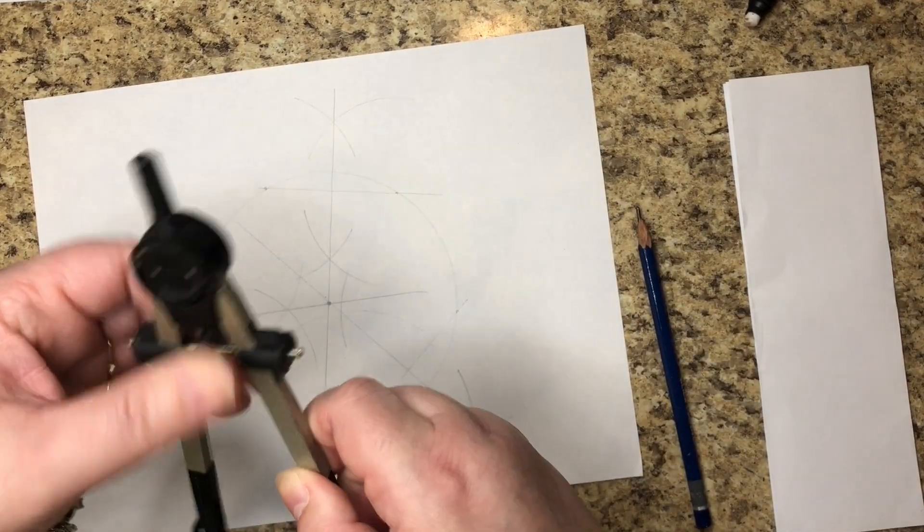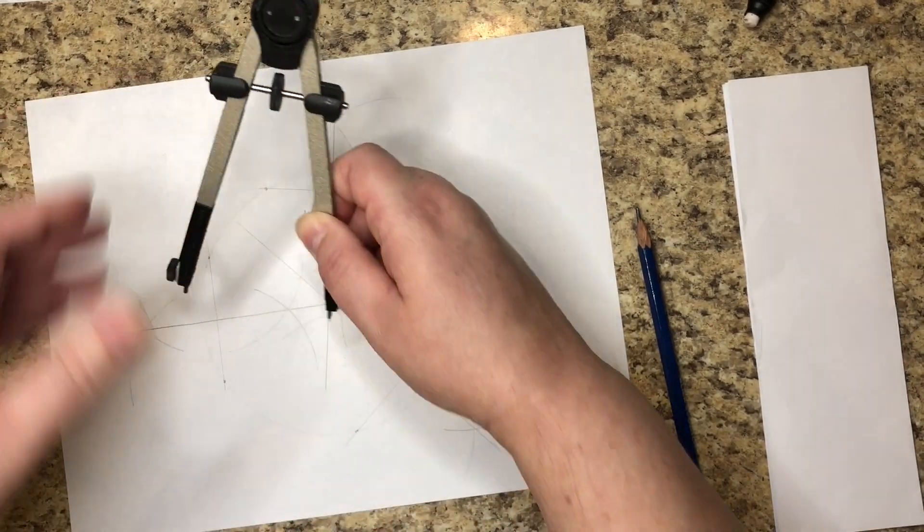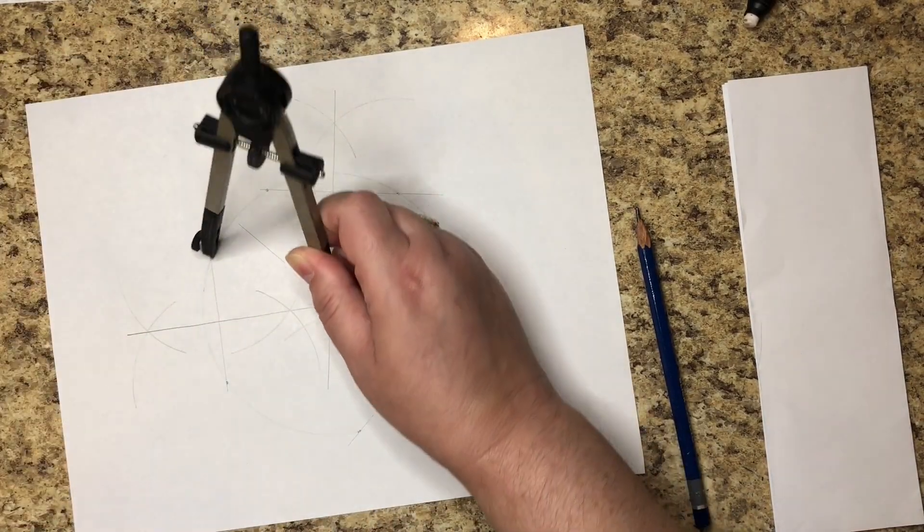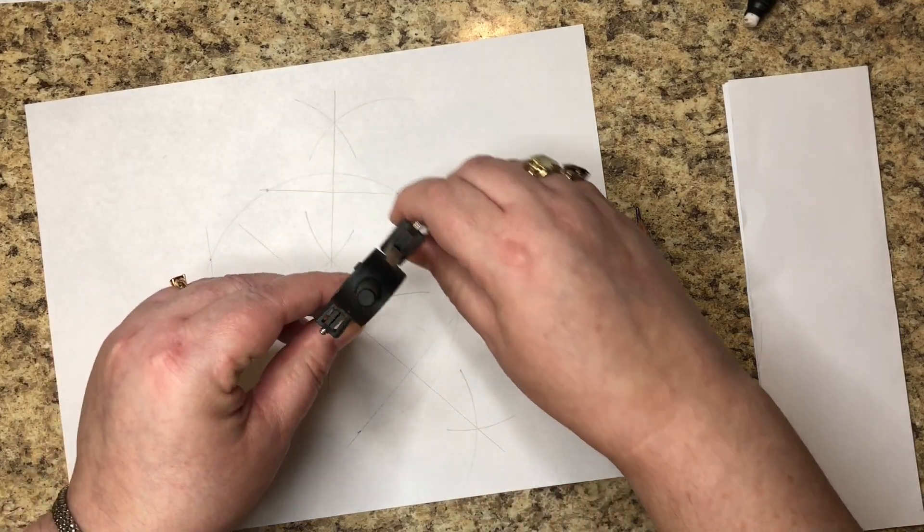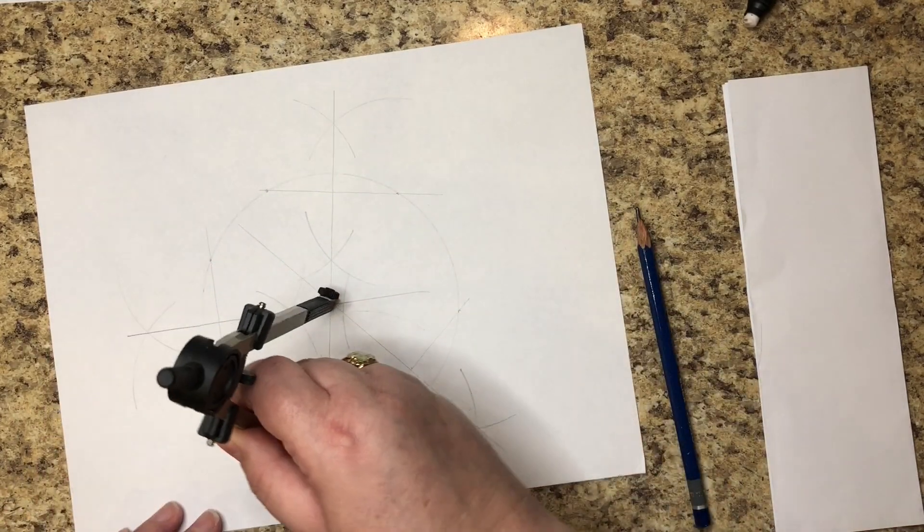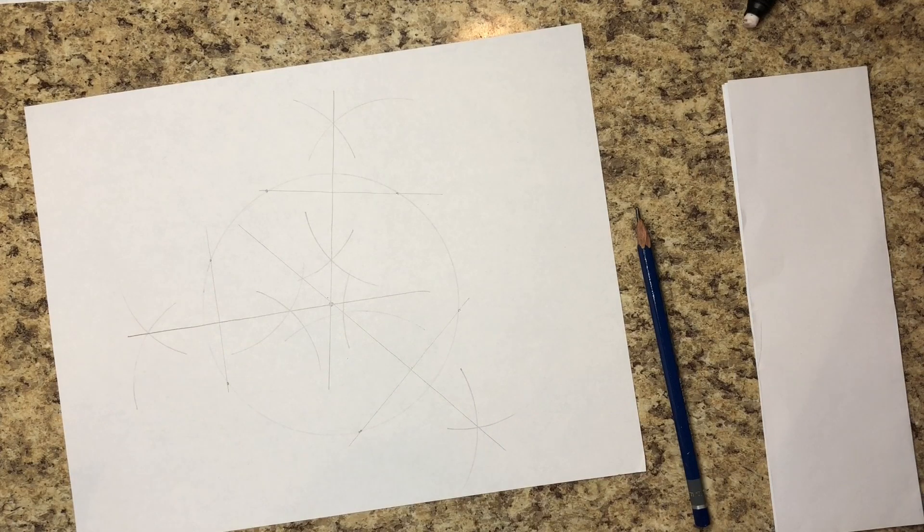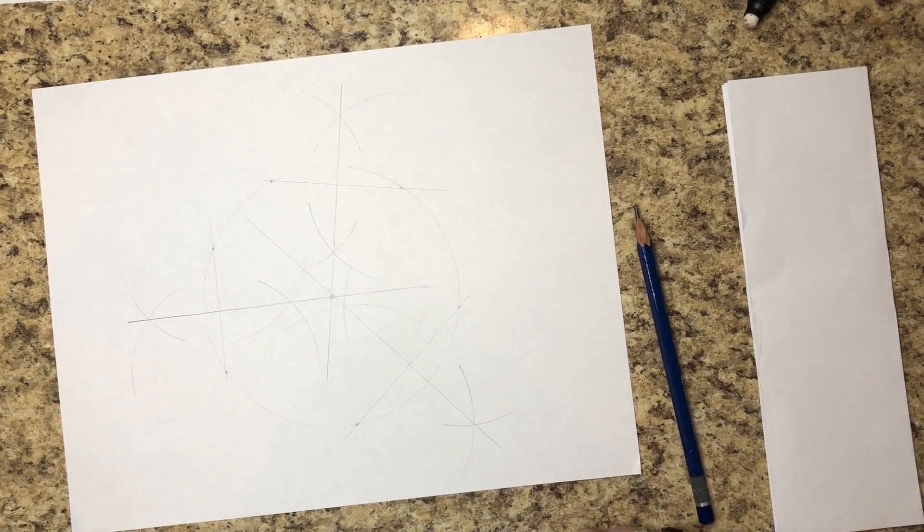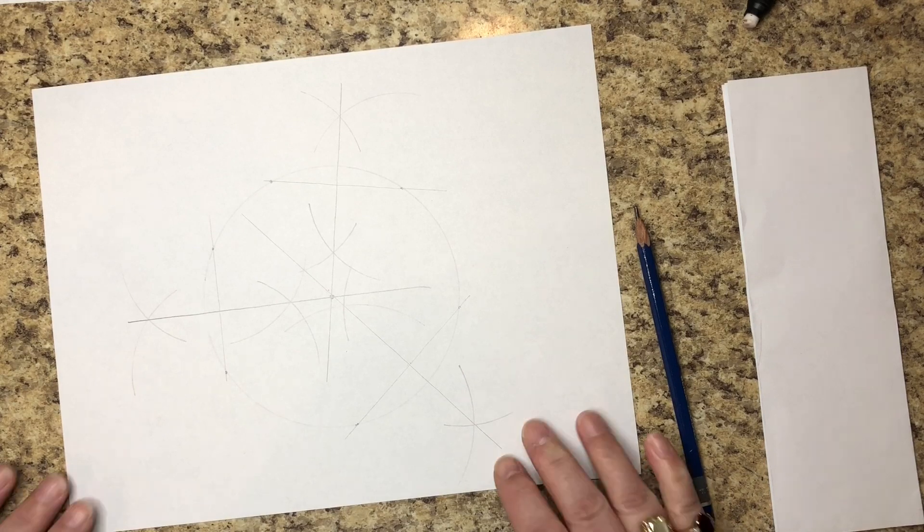Let's check either with our pencil or with our compass. And let's see. Yep, it is. That is the center of our circle. And there you go. Hope you learned something from this tutorial today.